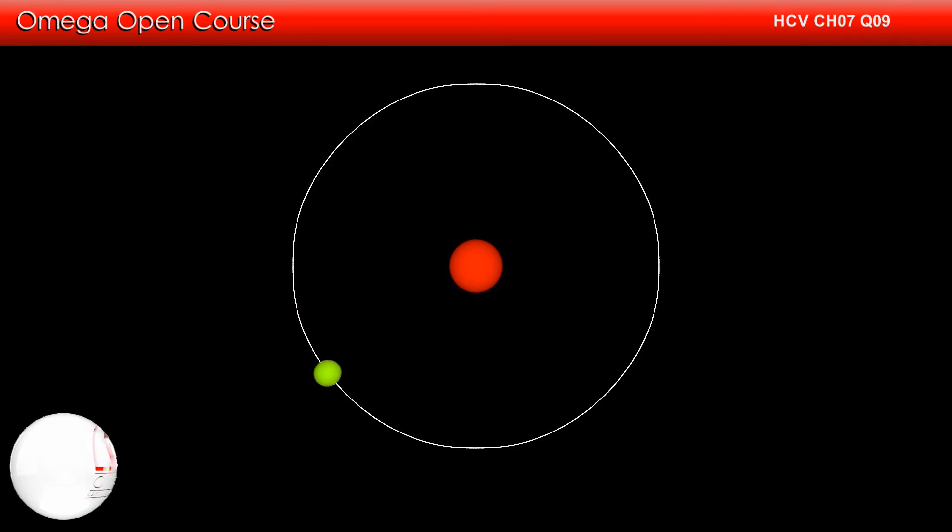For a particle moving in a circular path of radius r with velocity v, the required centripetal force is given by mv²/r. Also, the Coulomb force is given by kq₁q₂/r².